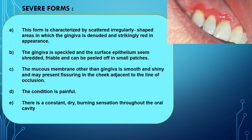The severe form of Desquamative Gingivitis is characterized by scattered, irregularly shaped areas in which the gingiva is denuded and strikingly red in appearance. The surface epithelium is friable and can be peeled off in small patches. The mucous membrane other than gingiva may be smooth and shiny, and may be present near the cheek adjacent to the line of occlusion. The condition is painful with a constant dry burning sensation throughout the oral cavity.